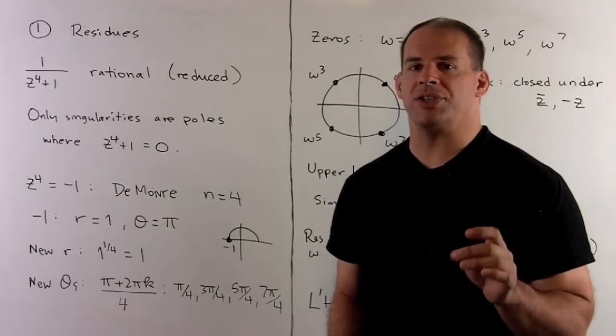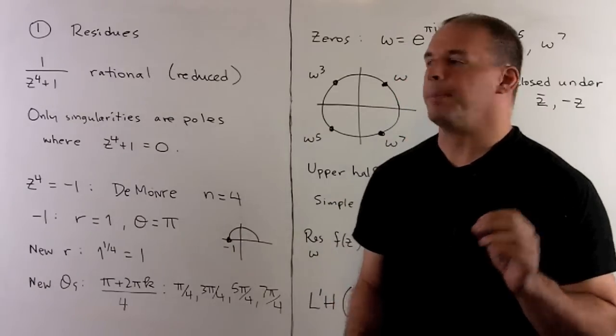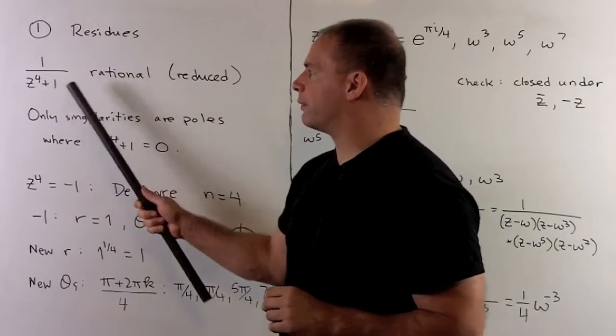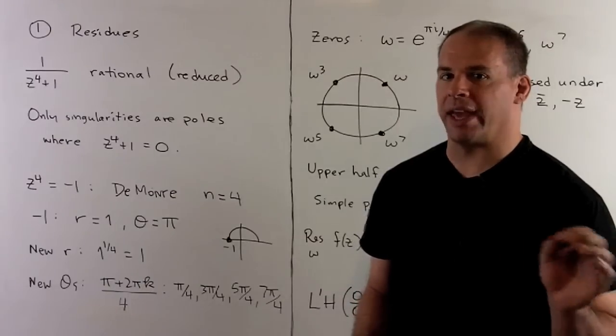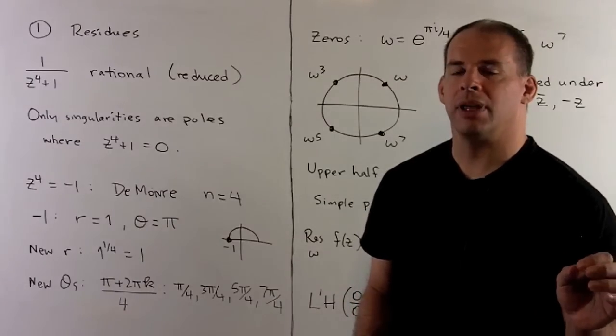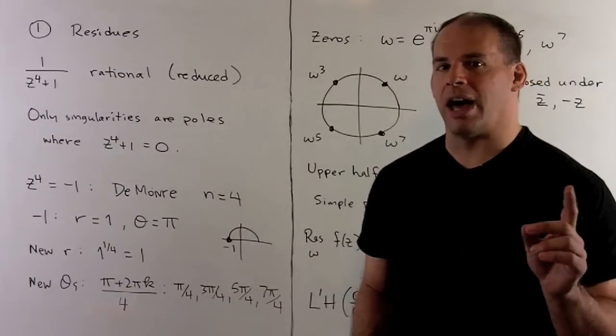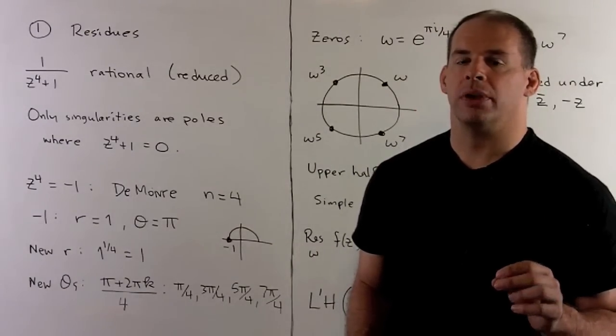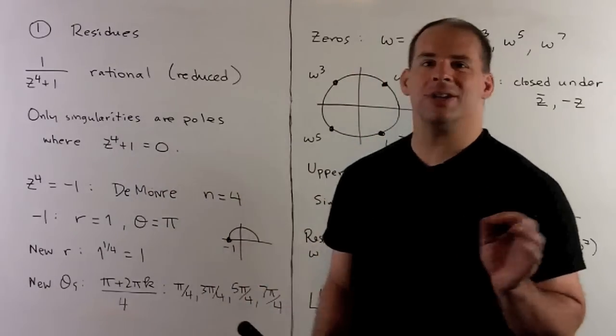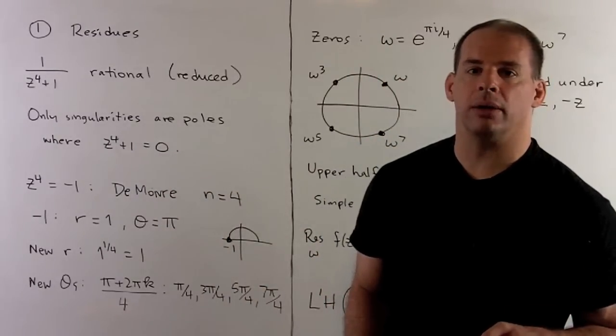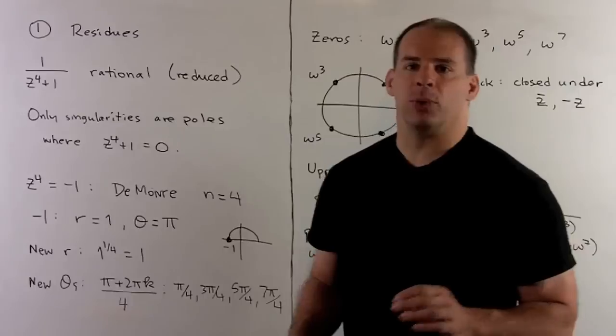Our first step is to compute the residues of the poles in the upper half plane. Now, our function is 1 over z to the 4th plus 1. It's a rational function, and it's reduced, so we can't cancel any further. That means the only singularities that can have are poles, and they're going to occur where the denominator is equal to zero. So, our poles occur where z to the 4th plus 1 is zero, or z to the 4th is equal to minus 1.